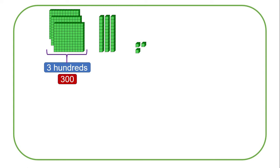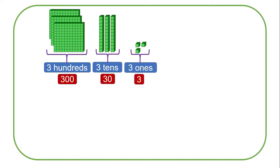In the next example we have got three blocks of hundreds, three blocks of tens, and three blocks of ones. You can pause the video and try to show the place value, the digit value, and the expanded form of the number being shown. Since we have three blocks of hundreds that number is 300, three blocks of tens gives us 30, three blocks of ones gives us three, and the whole number is three hundred and thirty-three.